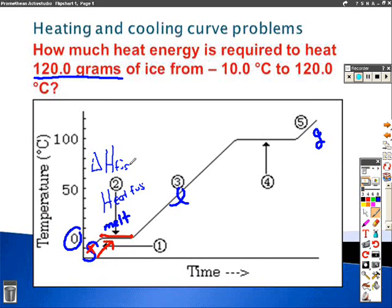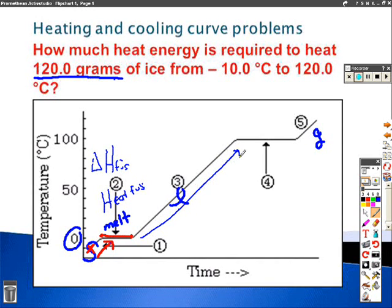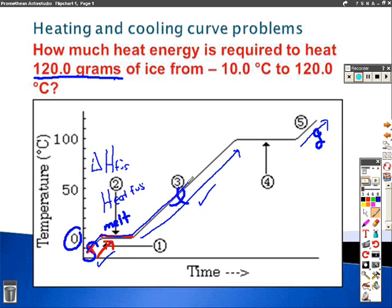At this point you're at zero degrees, and you're heating 120 grams of water all the way up to 100 degrees — that's going to take a lot of energy. Remember, anytime you're going uphill, you're using specific heat. So here you're going to use a specific heat problem, and there's one other place you'll use it too — in the gas region. So we've heated the ice to zero, melted it, overcome the intermolecular forces, and now heated it up to 100.